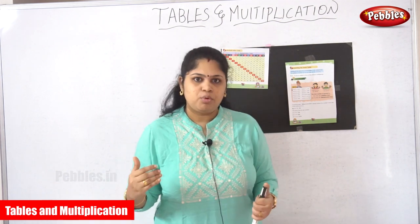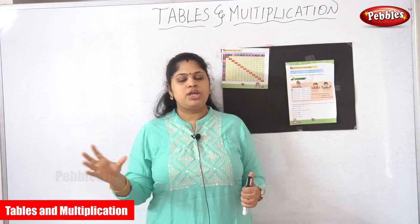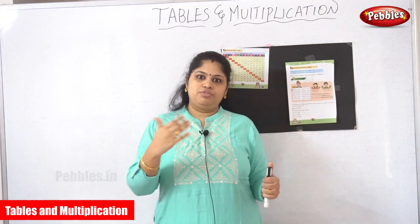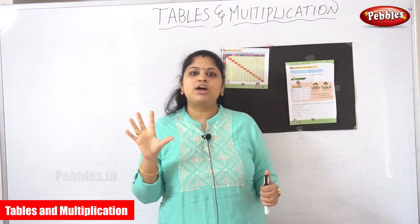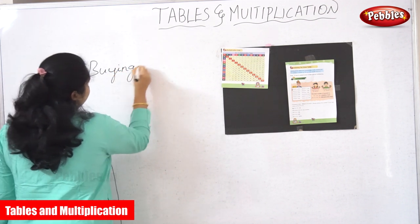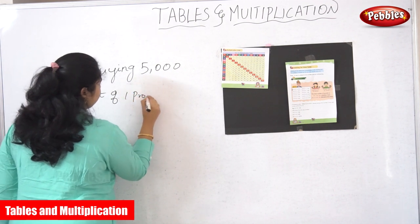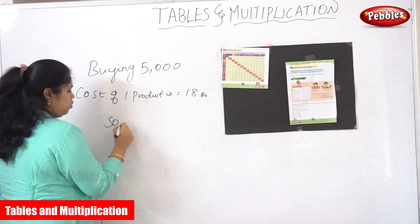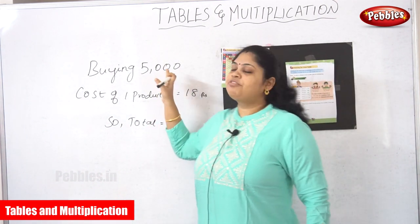For example, suppose you are buying 5000 products, all at the same cost. The cost of one product is 18 rupees, and you are buying 5000 products. The total cost of one product is 18 rupees and you are buying 5000 of them. How are you going to calculate the total?